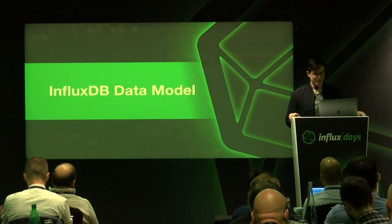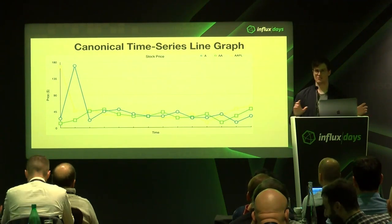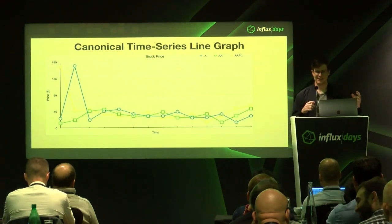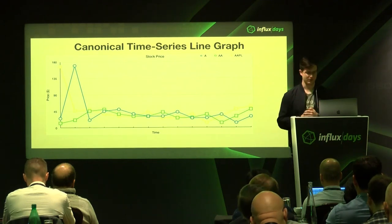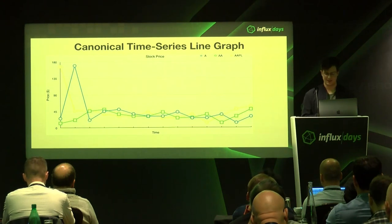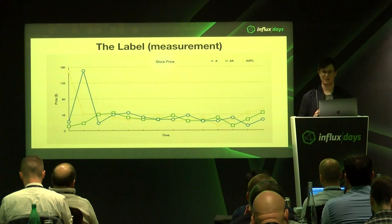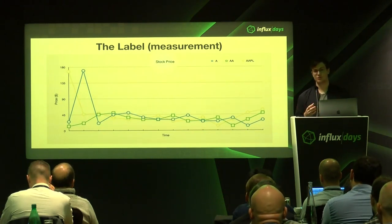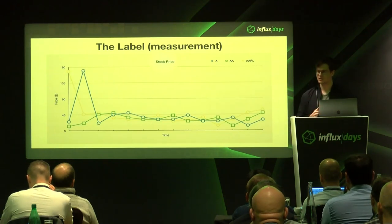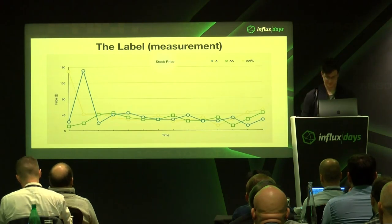Now I'll talk about the InfluxDB data model. I'll start with a canonical time series line graph and reason about the various pieces. I always struggle to explain what a measurement and a tag are and how they're different. Whenever I come back to a graph, I can pretty easily reason about these things. We have a graph with stock price — x-axis time, y-axis price — with some legend data. That label at the top we call the measurement, a high-level grouping for all the data beneath it. Common examples for measurements are memory, CPU, or Postgres. It's somewhat similar to a table name in MySQL, but a layer above that.